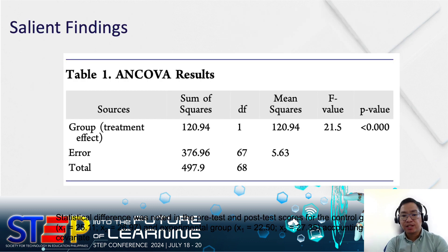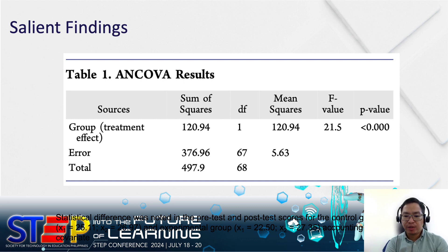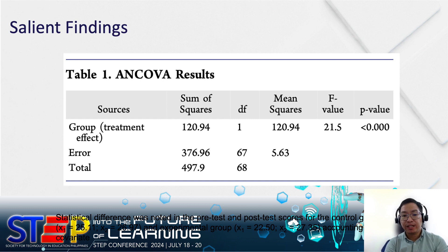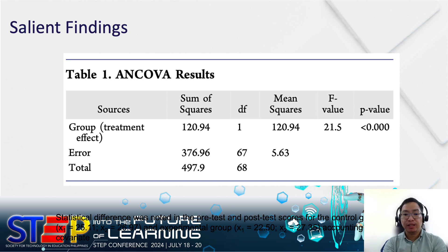Statistical difference was noted in the pretest and posttest scores for the control and experimental group accounting for the covariate, as indicated in Table 1. This improvement in academic achievement due to the integration may be because of the game-based learning principles integrated into the intervention. Since chemistry involves many fundamental and significant concepts, integrating cognitive and affective learning experience is critical for learning. The developed game provides students more opportunities to practice what they have learned in class in a fun and engaging way, and immediate feedback and active participation help sustain effective learning compared to passive learning in the conventional class.